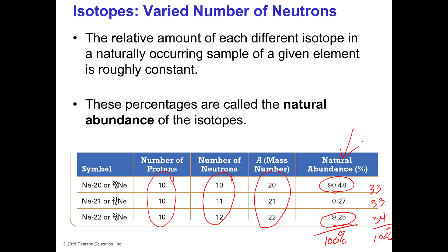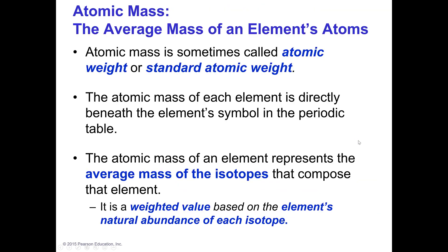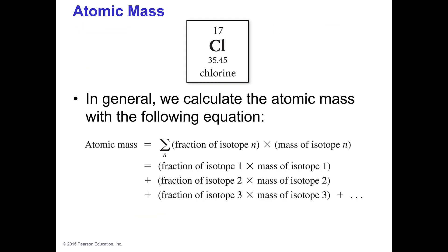Since they have different abundances, I have to do what's called a weighted average. You've probably experienced weighted averages — a lot of teachers grade that way. What you do is take the abundance times the mass, add those up, and get the average mass of all the isotopes. This reads as the sum of all: the fraction of an isotope times the mass of that isotope. You do the fraction times the mass for each isotope, add them together, and get the weighted average. You don't divide by anything because you've already accounted for that by multiplying by the fraction.